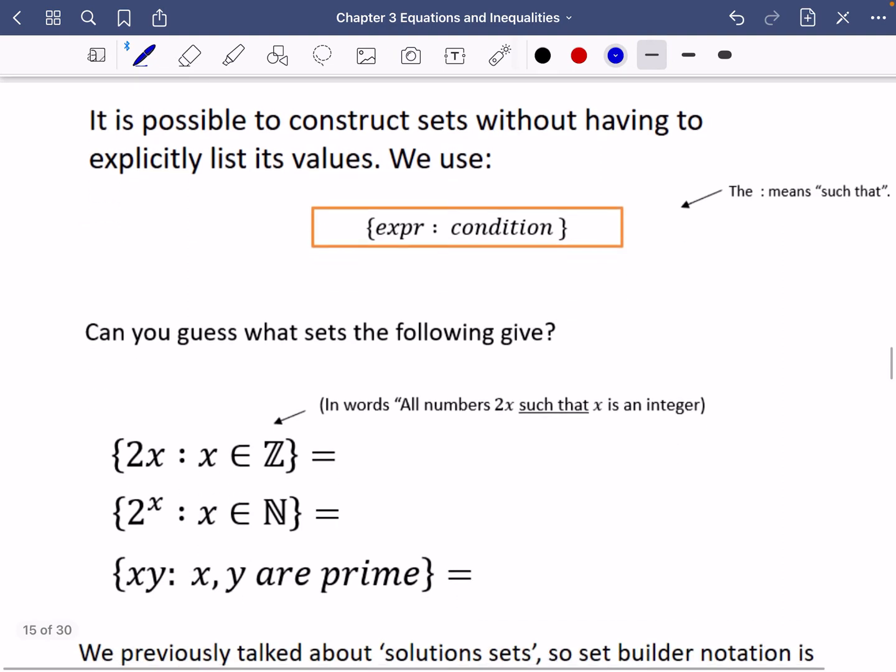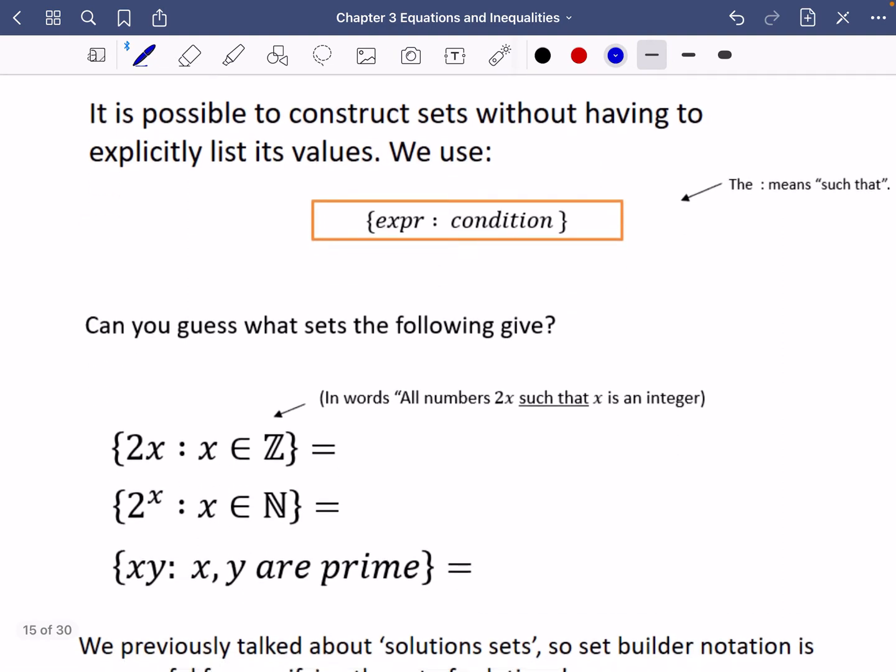And it's also possible to construct sets without having to explicitly list its values. So what we use is something where we do a curly bracket. We say what the expression is that we're looking at, maybe something like x, and then we do a colon, and then we apply a condition. We might say something like this. So this would be the set of numbers of x which are greater than two.